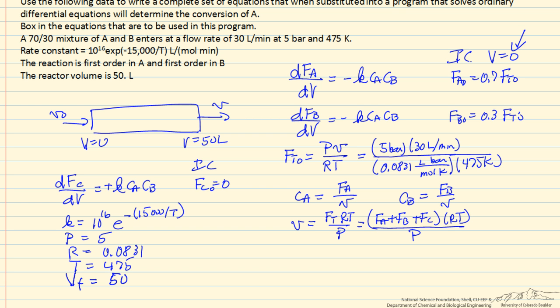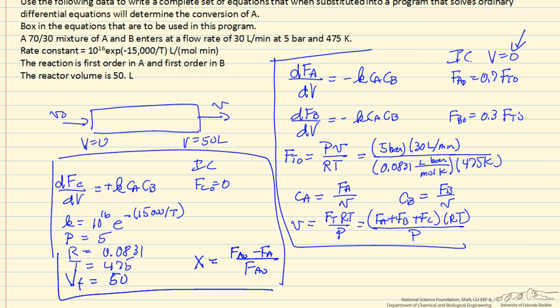Calculate conversion. So if the problem is asking what is the conversion, we can certainly calculate that also in the program, which is Fa0 minus Fa over Fa0. We can't use concentration to calculate conversion because of the mole change. And so we have this series of equations here plus the equations here. We need all of these equations and substitute into a program to calculate the conversion of our reactant A.